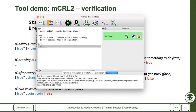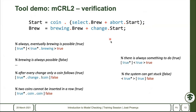Model checking in a nutshell means specifying your model, specifying your property, and hopefully getting a yes or no. In more advanced cases you can actually get either a witness or a counter-example where your property failed. It's not always possible to present this, and there are certain properties where you can try to guide or give scenarios that explain why something holds or doesn't hold. This is MCL2 — at least a very short view of it.